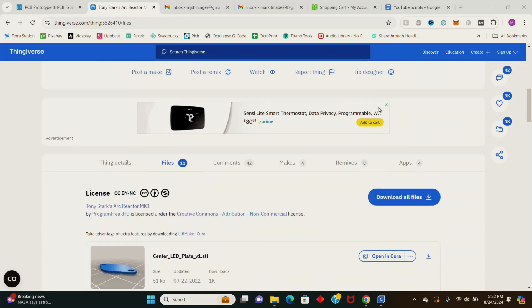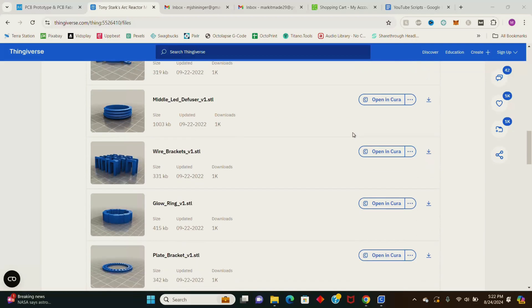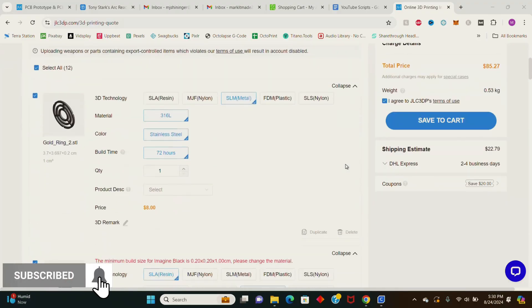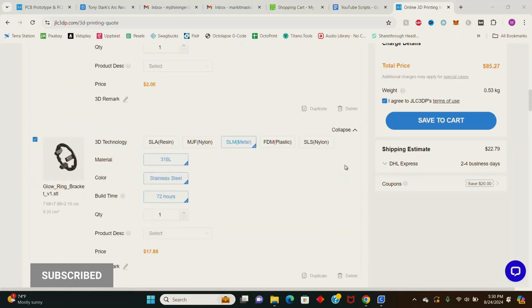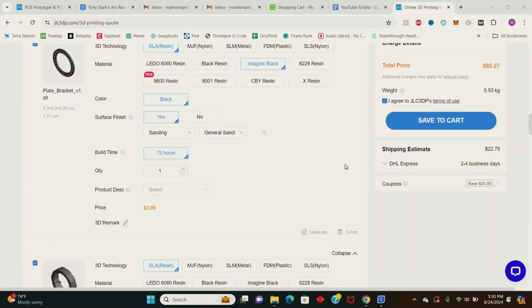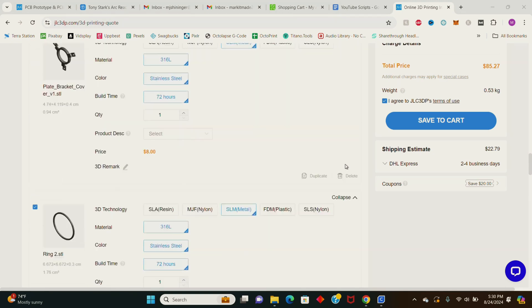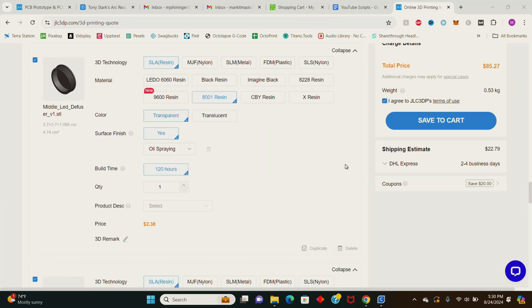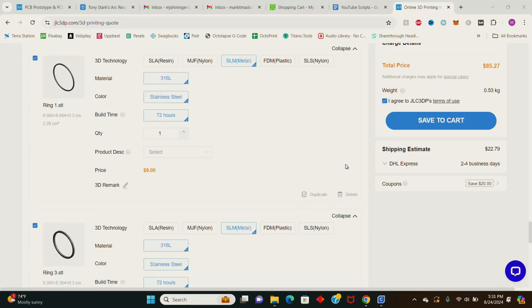I downloaded these files for free off Thingiverse and we'll have a link in the description below. If you've tuned into this channel before you know that I'm a sucker for metal 3D printing. So I ordered the majority of these parts from the JLC 3DP website in 3D printed 316 stainless steel. I also ordered a few parts in black and transparent resin.